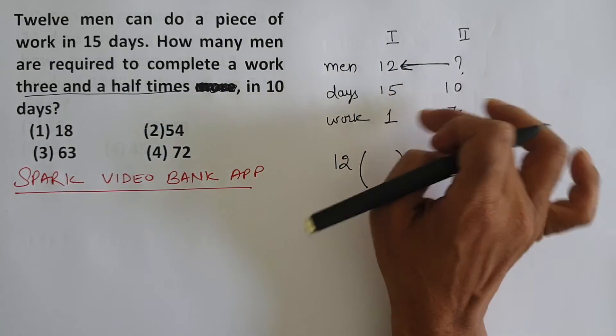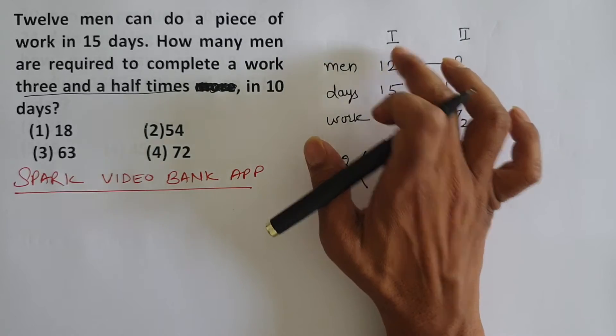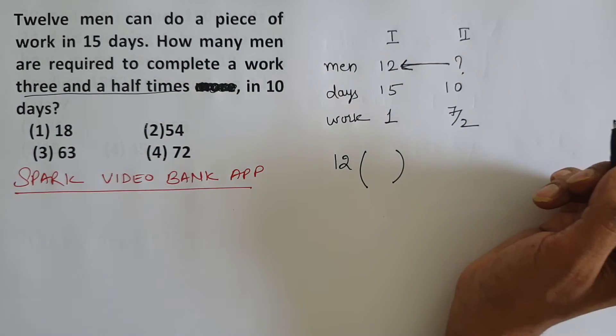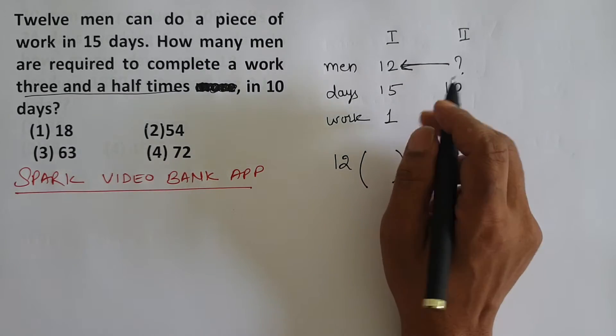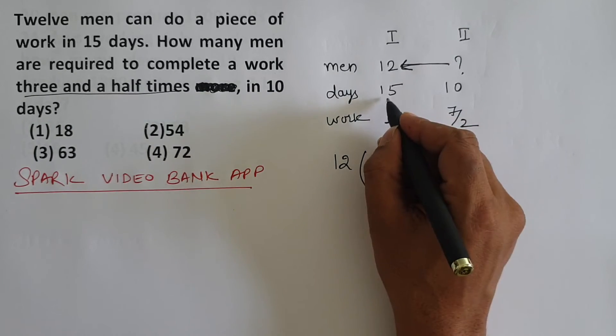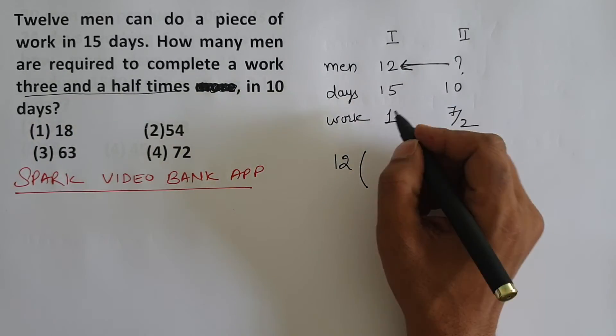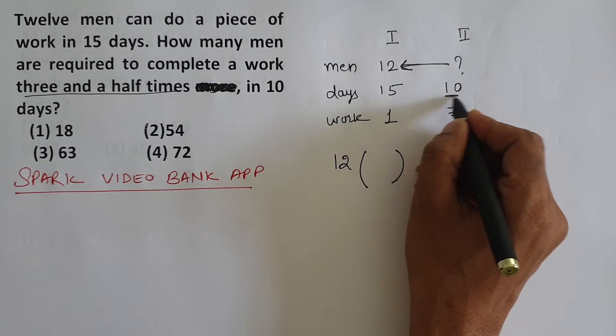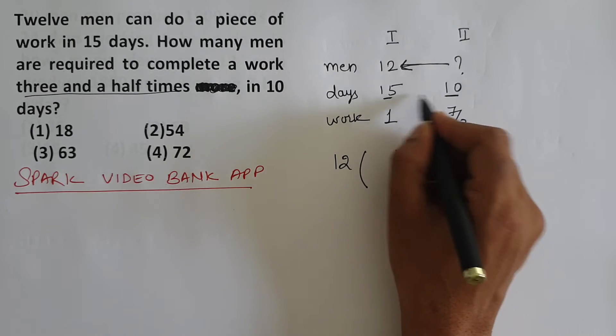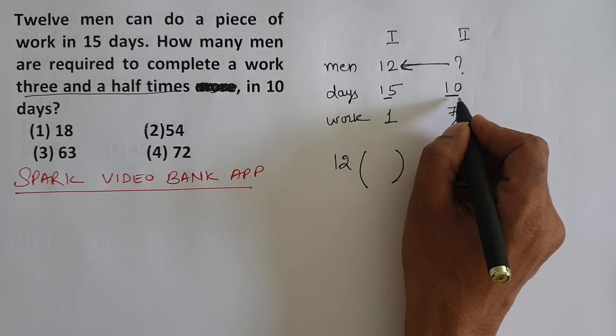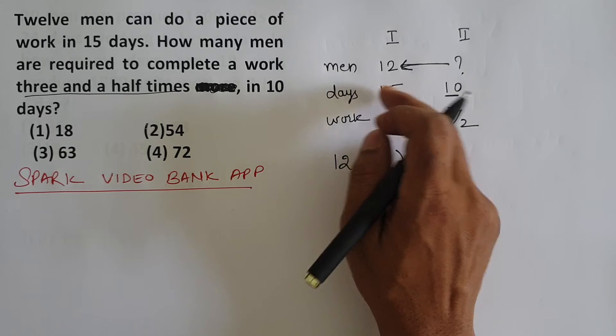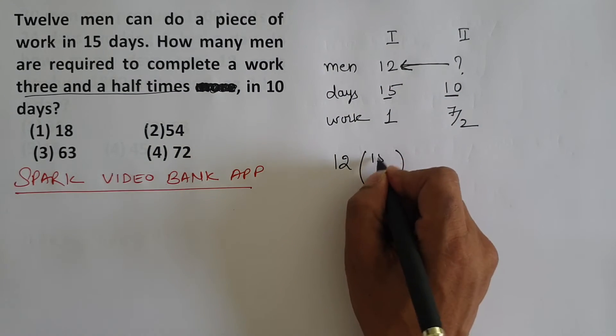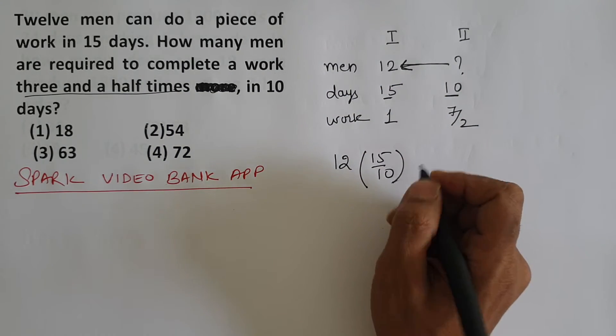Now, these two things have changed, their impact will fall on the number of men. Earlier 12 men were needed. Now imagine you're thinking like a contractor - if you have to get the work finished quickly, time has reduced, work needs to be finished quickly, then you'll have to increase men in that proportion. So 15 became 10, so 15 upon 10.